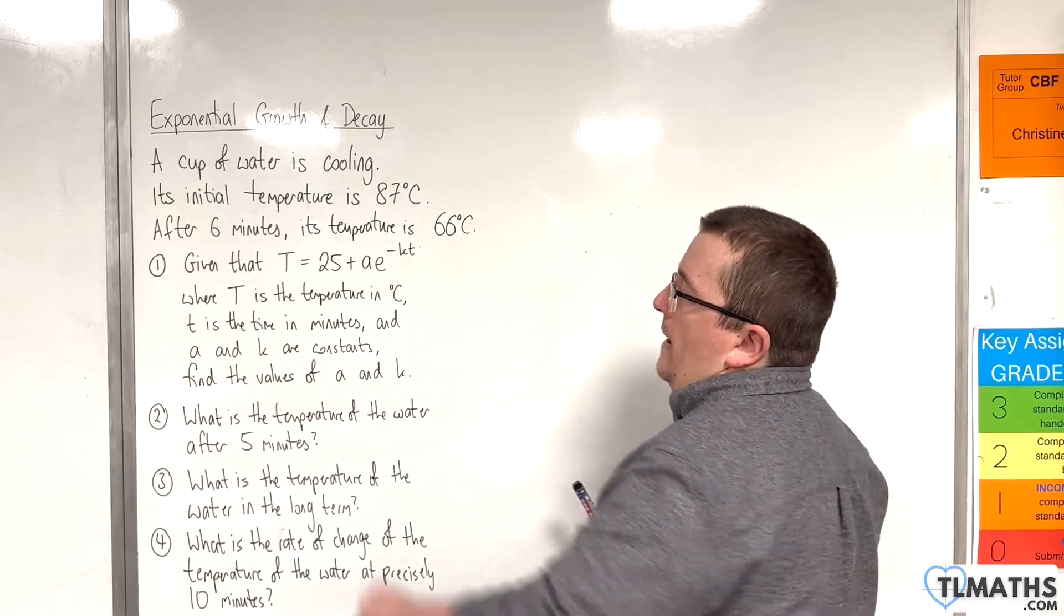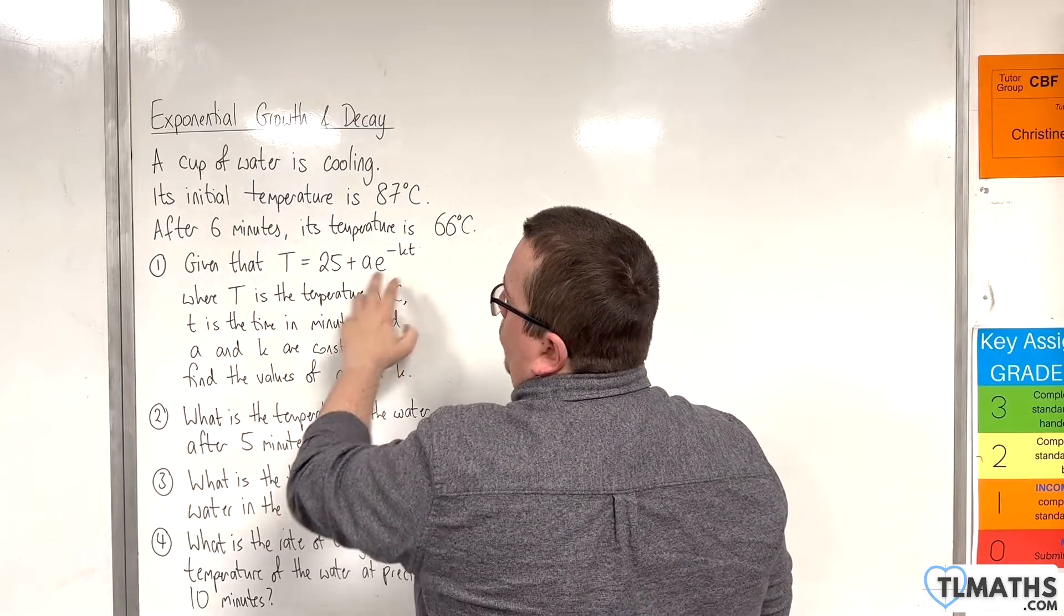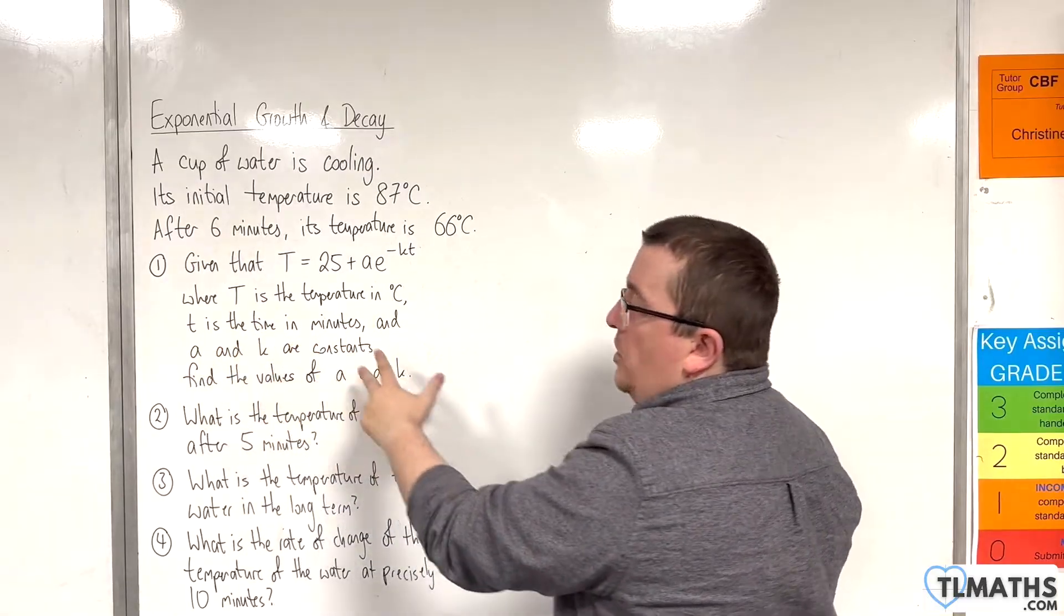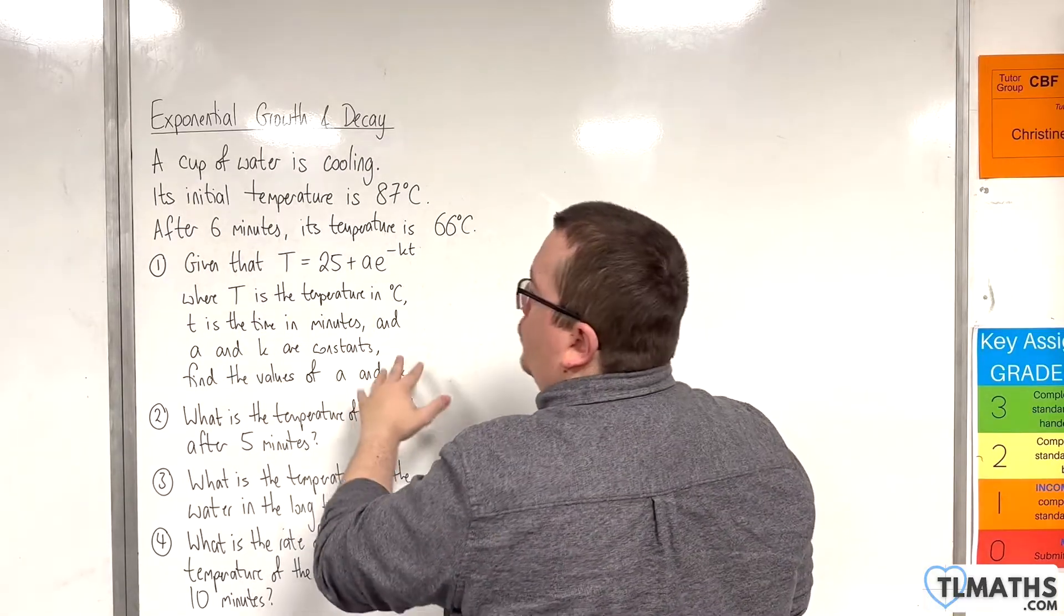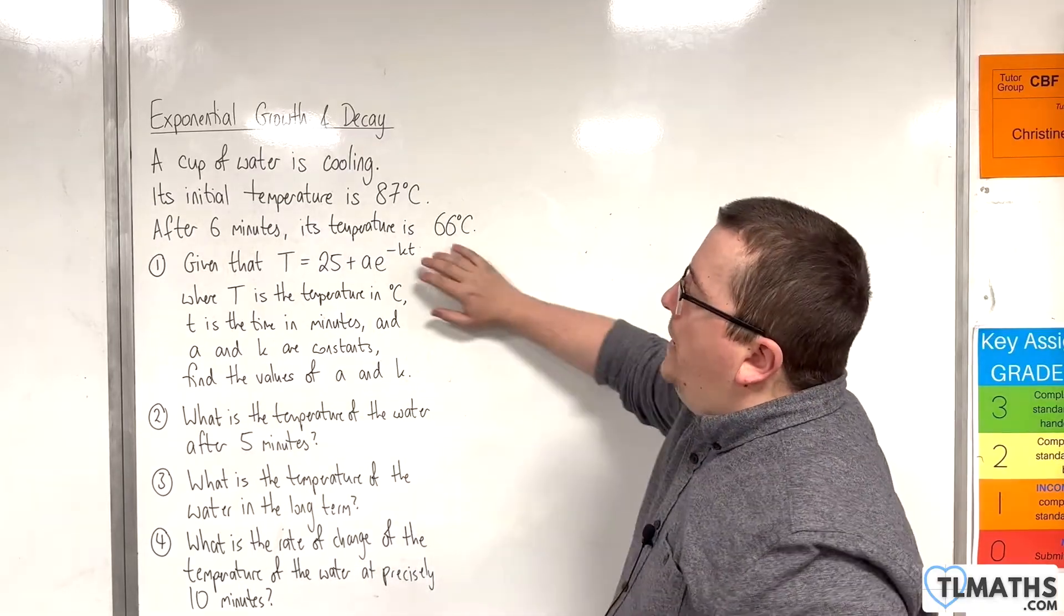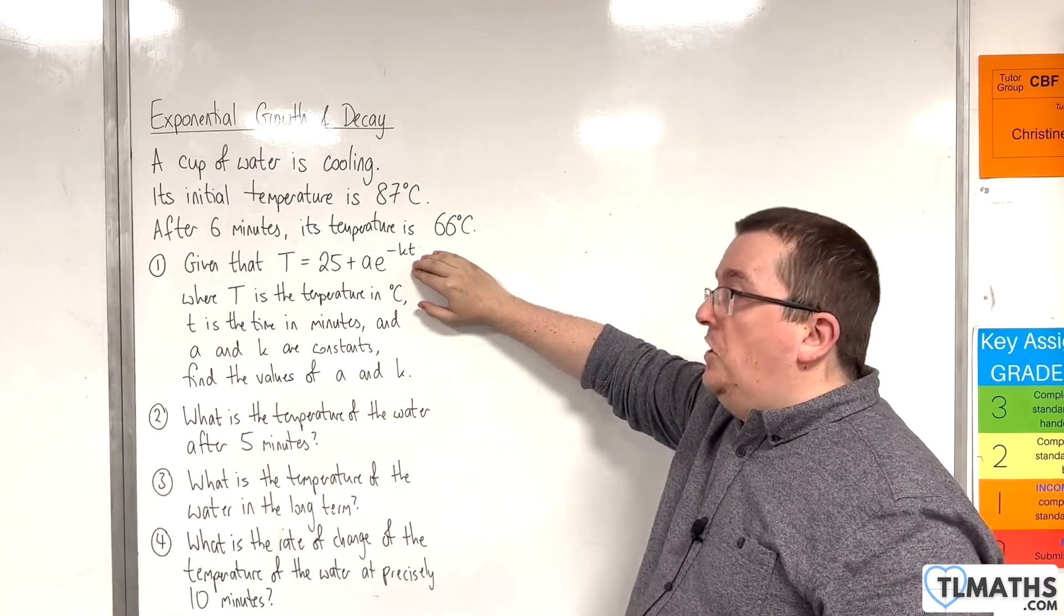Now given that capital T is 25 plus AE to the minus KT, where T is the temperature, so capital T is the temperature, lowercase t is the time in minutes, and A and K are constants, find the values of A and K. So this is an equation that is modelling the temperature with respect to time.